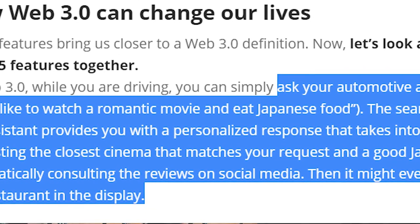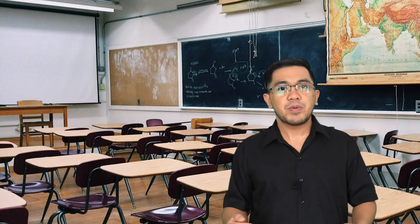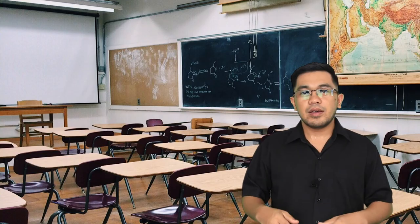Here's an example from expertsystem.com: in web 3.0, while driving, you can simply say 'I would like to watch a romantic movie and eat Japanese food.' The search engine embedded in your car assistant provides a personalized response based on your location — suggesting the closest cinema and a good Japanese restaurant by consulting reviews on social media, and may even present a 3D menu from the restaurant.